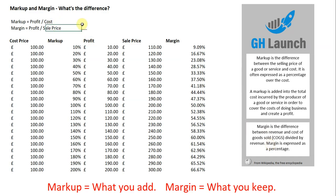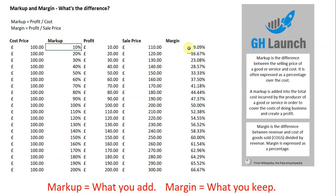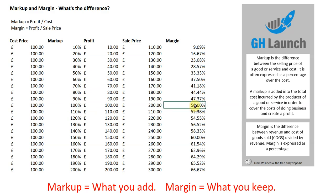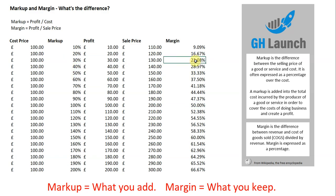Let's have a look at how markup and margin are correlated. A 10% markup will always be 9.09% margin. A 100% markup will always be 50% margin. You can see how dangerous it could be if you don't know the difference between the two. If you're trying to achieve a 33% margin and you mistakenly add a 33% markup, then you're making more like a 23% margin.